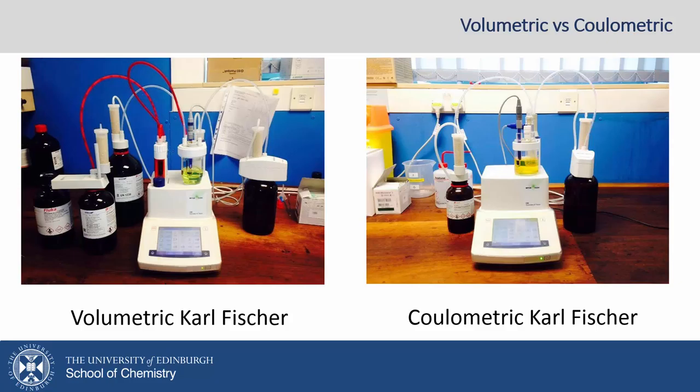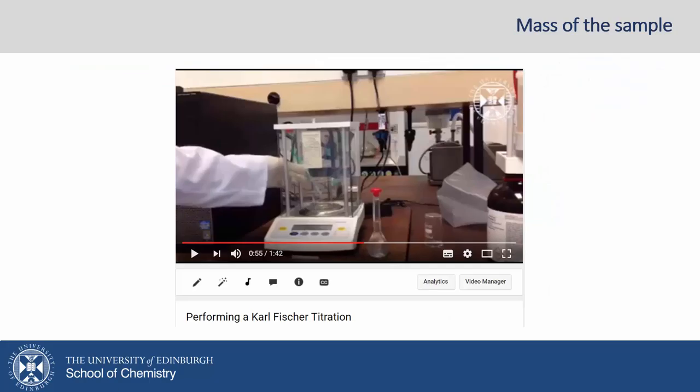For coulometric titrations, iodine is generated in situ from iodide ions, producing iodine which reacts with water. This continues until all the water is used up. This approach — the generation of iodine in small amounts — means that it can be used for analysis of samples with a much smaller amount of water present.